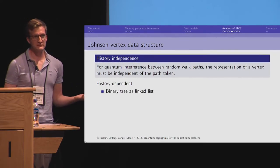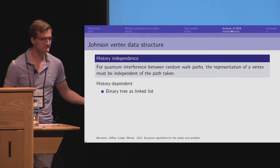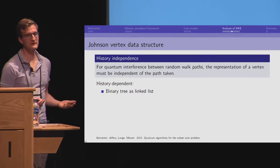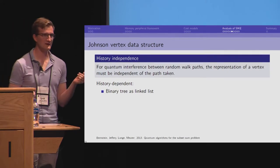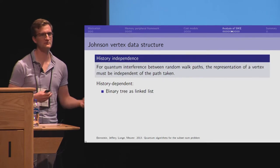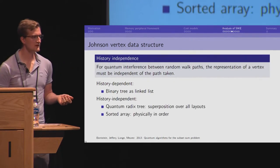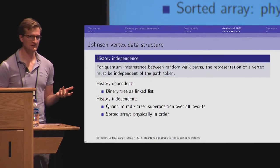Our favorite data structure classically to represent a set is a binary tree that we would implement as a linked list. But this doesn't work because we have fragmentation, we have the layout changing depending on the order. So, for history-independent data structures, the previous quantum approach was what's called a quantum radix tree, where you take a binary tree and make a superposition over all inputs.